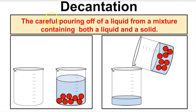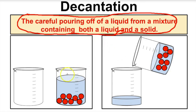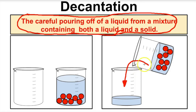Decantation — you probably use this quite a bit without even knowing it. Decantation is the careful pouring off of a liquid from a mixture containing both a liquid and a solid. For example, suppose we had a beaker of water and marbles. We can simply very carefully pour off the liquid from this beaker into another beaker, making sure we don't pour any marbles in. In the end, we will have water in one beaker and marbles in the other — separating the components of that mixture using decantation.